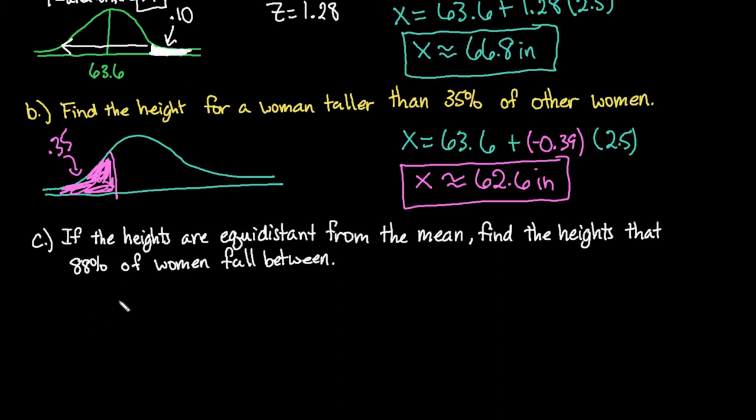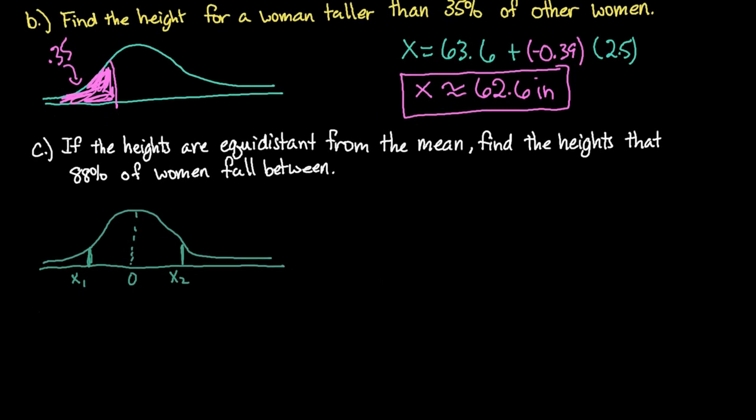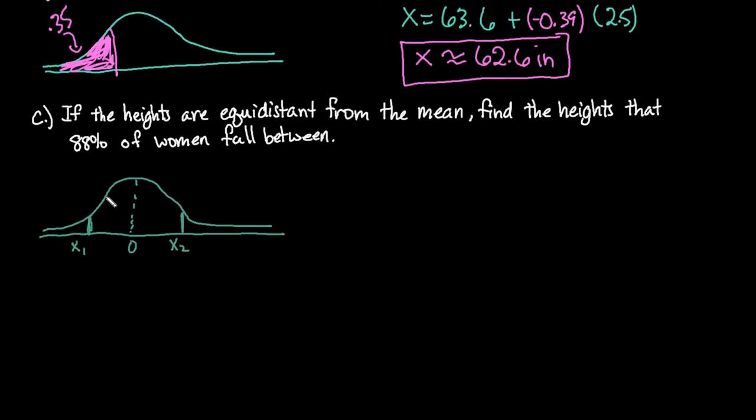And then the last one that we're going to look at is if the heights are equidistant from the mean, so that tells us that we have two values that are the same distance from the mean. So this would be my first x value and my second x value and we want 88 percent of the information to be in between that so 0.88.